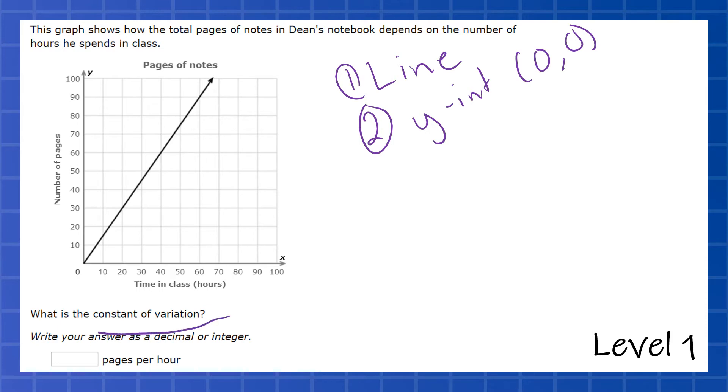And when we have a direct variation, there's something called a constant of variation. If we were to write the standard form, it's y equals kx.